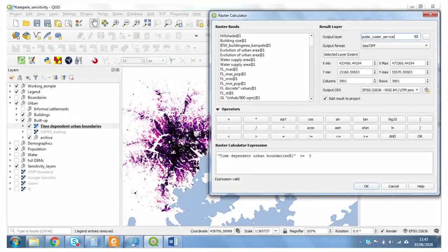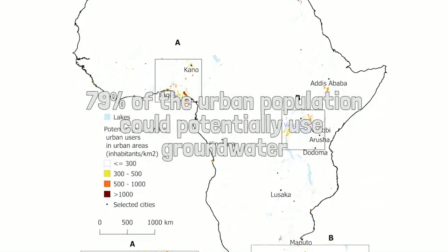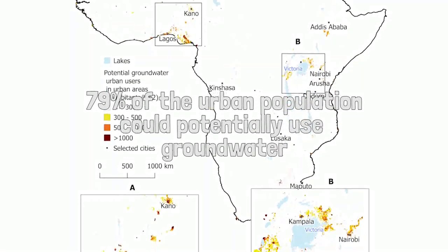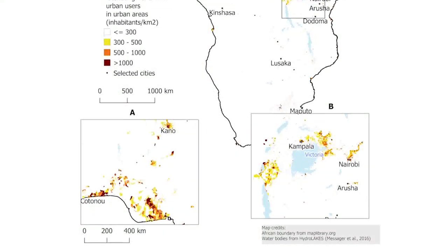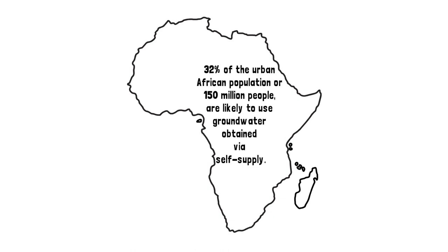Our results indicated that an estimated 79% of the total urban population in mainland Africa could potentially use groundwater to meet their domestic needs. When we extrapolate our method across the continent, excluding islands, we estimate that around 32% of the urban African population, or 150 million people, are likely to use groundwater obtained via self-supply.